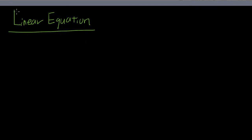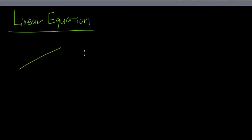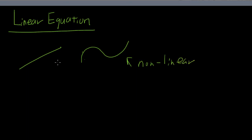Linear simply means straight line. What do we call something not straight? For example, something like this — this is going to be nonlinear. So straight line means linear.